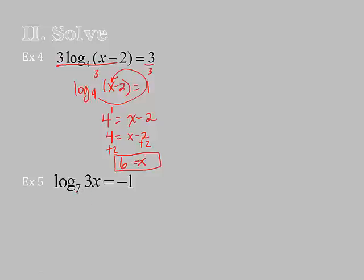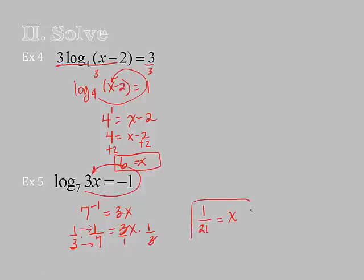Let's try this one. I've got a single log, so I don't need to condense. But I do need to swirl. So I say 7 to the negative 1 power equals 3 times x. Remember your negative exponent. It puts it in fractions. So 1 over 7 equals 3x. Now I need to get rid of the 3 by multiplying by its reciprocal. That will cancel my 3s. When you multiply fractions, you multiply straight across. So 1 over 21 equals x.